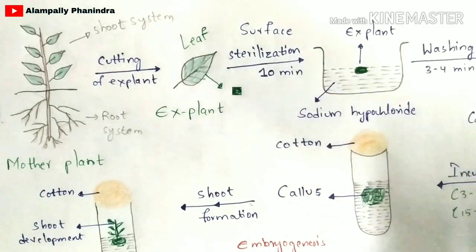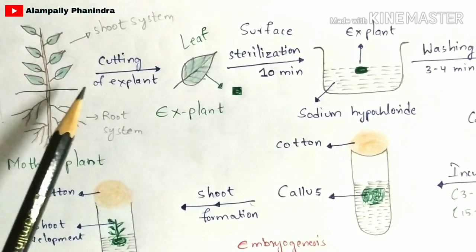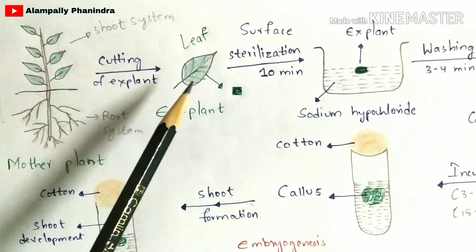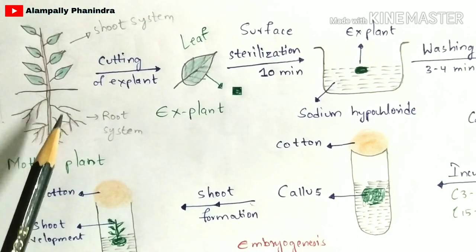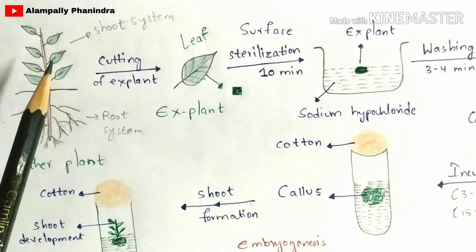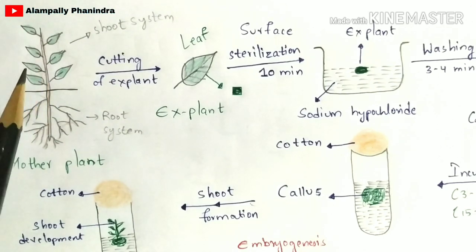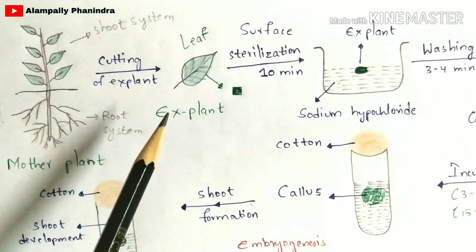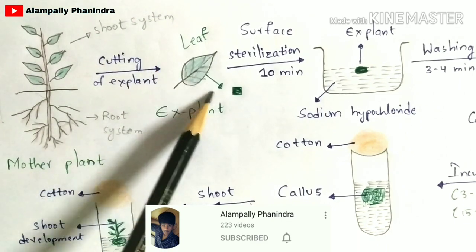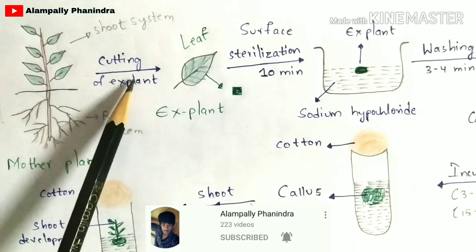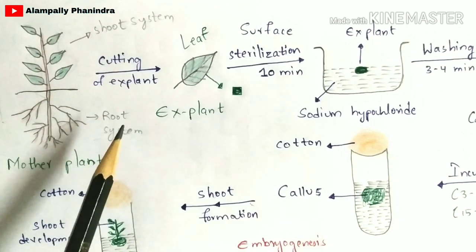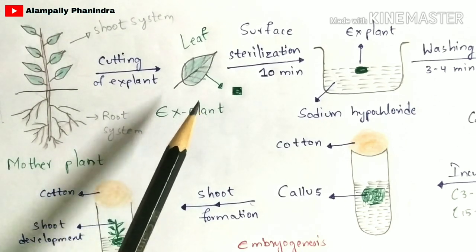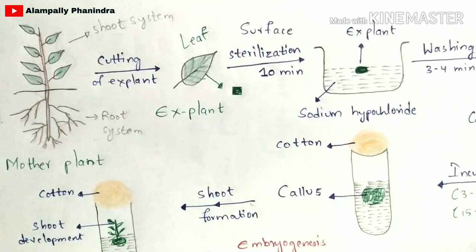The second step is to select an explant. An explant is nothing but a part of a mother plant. You can take a part of a root, a part of a leaf, a flower, a meristem, or a stem. For example, if you take a flower, you have to cut the anthers and pollens, and those anthers and pollens are called explants.